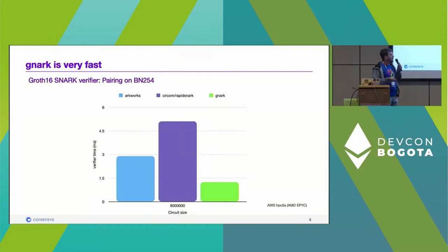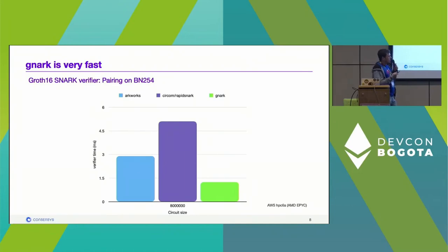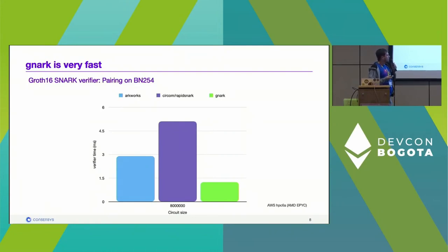For the verifier side — Groth16 SNARK verifier — which is mainly a pairing computation over BN254, gnark is very fast: just over one millisecond on this machine to verify a proof, which is mainly a multi-point pairing computation.